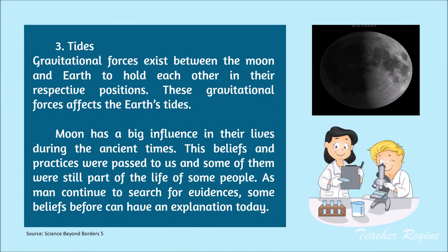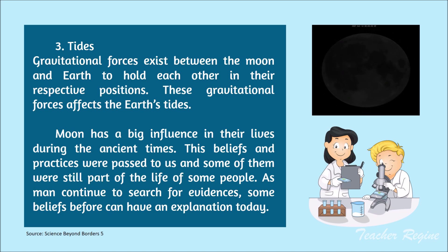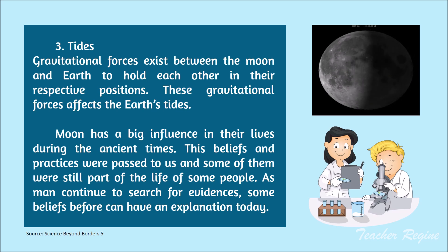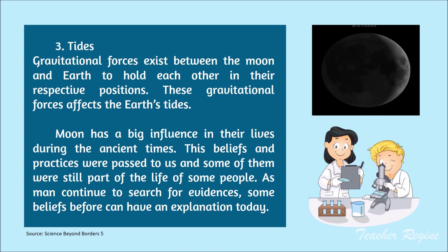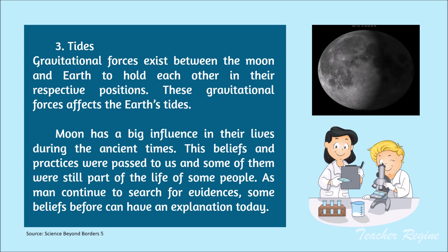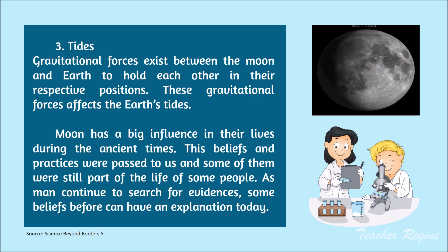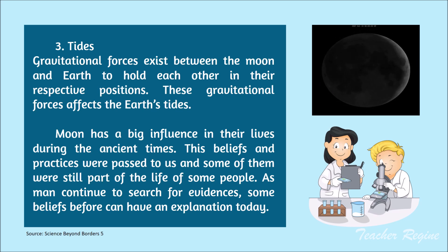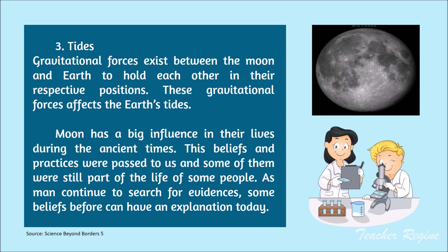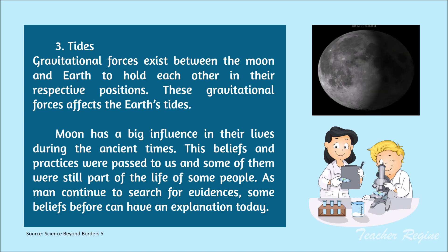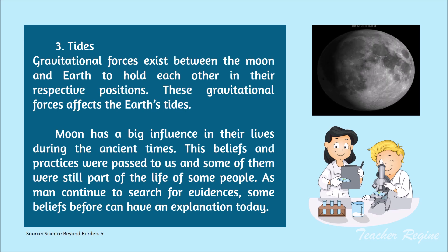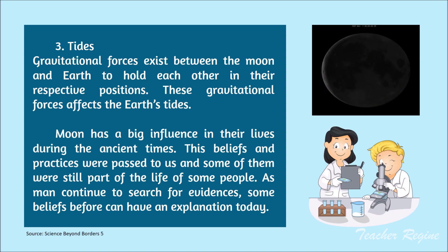The third one is tides. Gravitational forces exist between the moon and Earth to hold each other in their respective positions, and these gravitational forces affect the Earth's tides. Tides are the rising and falling of sea levels with respect to land. Imagine the moon as a magnet and Earth as a huge metal. When one side of the Earth is close to the moon, that side will be pulled towards the moon, causing it to bulge. Since Earth is covered with 75% of water, this bulging side causes the ocean level to rise — known as high tide. On the other hand, the other side experiences low water level, which is known as low tide.